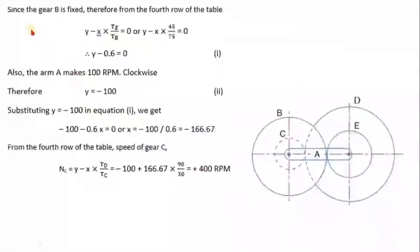Now we will start here. Since the gear B is fixed, therefore from the fourth row of the table that is y - x × TE/TB will be 0, or y - x × 45/75 will be 0 because TE is 45 and TB is 75. So this we can say y - 0.6x will be equal to 0.